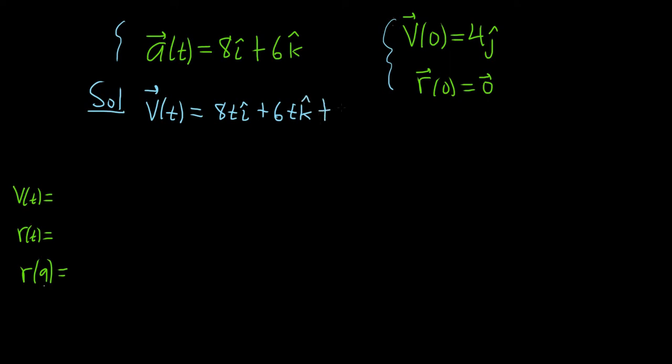Plus, we always add an arbitrary vector, which we'll call capital C. Now we're going to use our first condition here, v of 0 equals 4j.